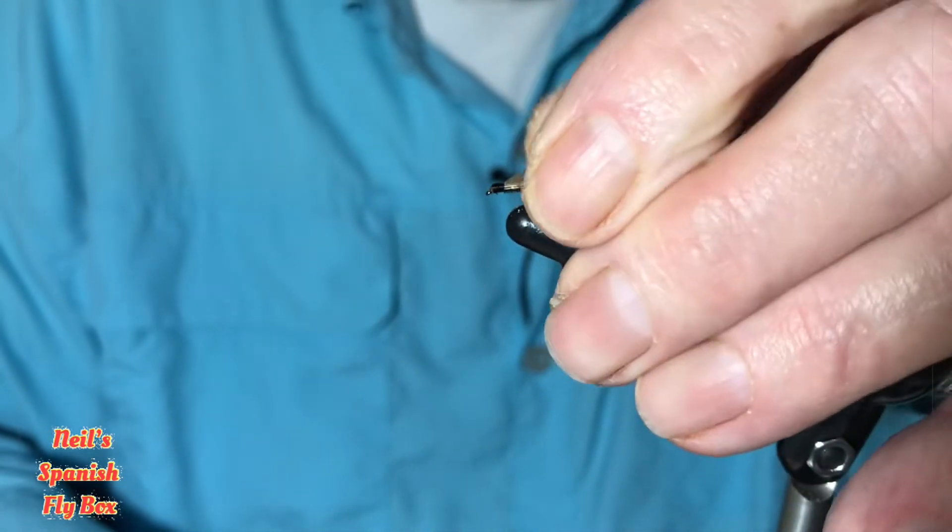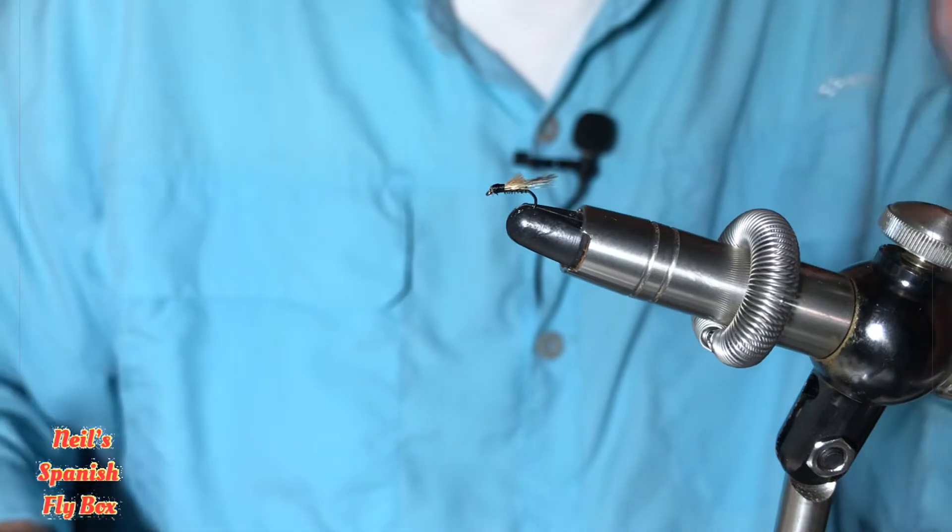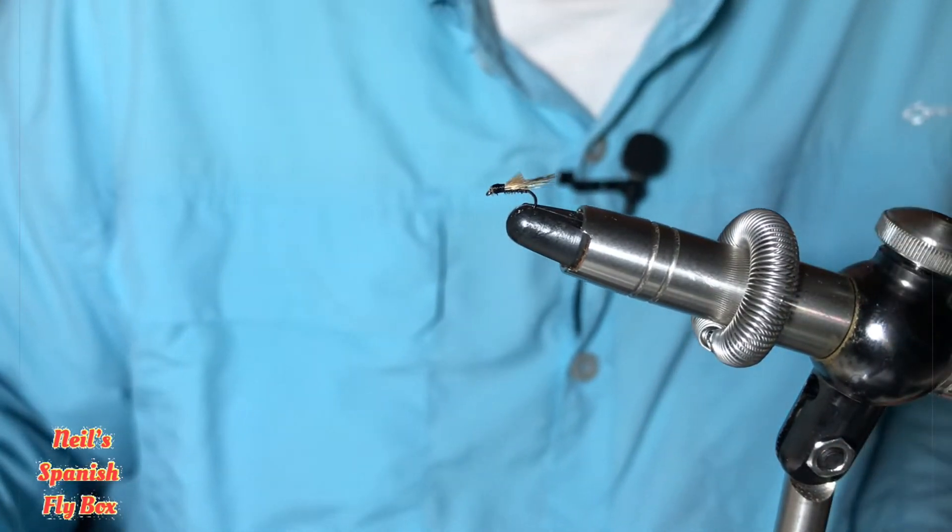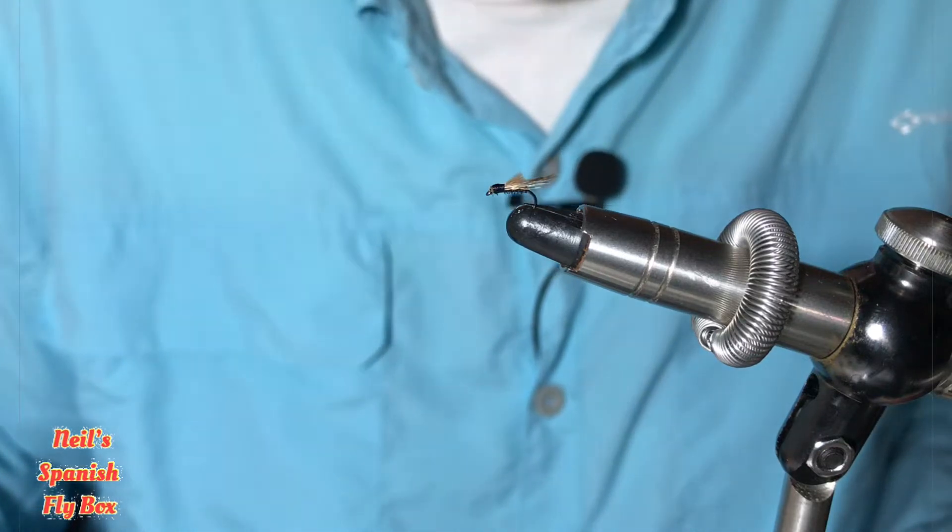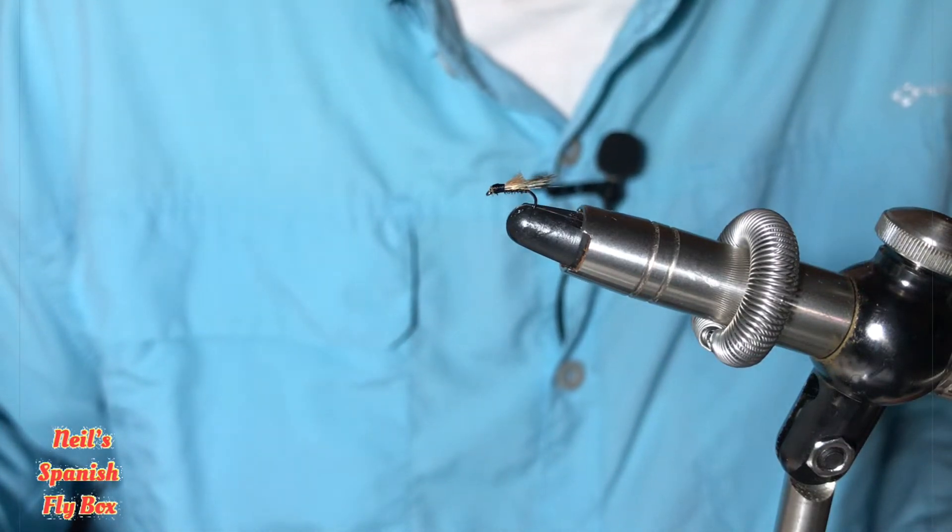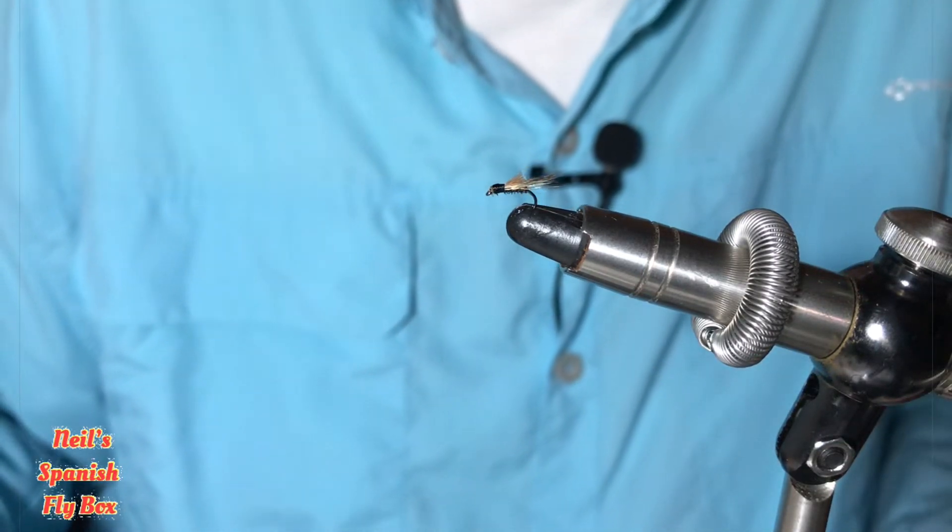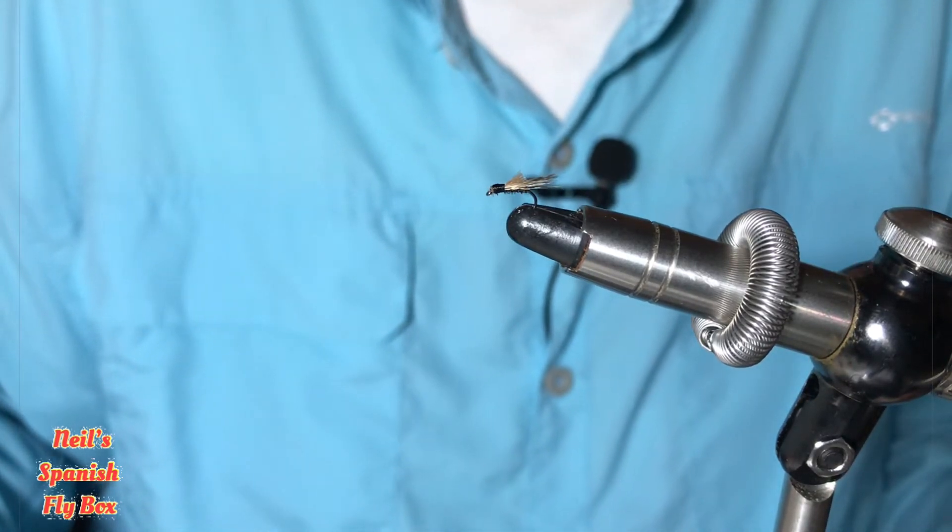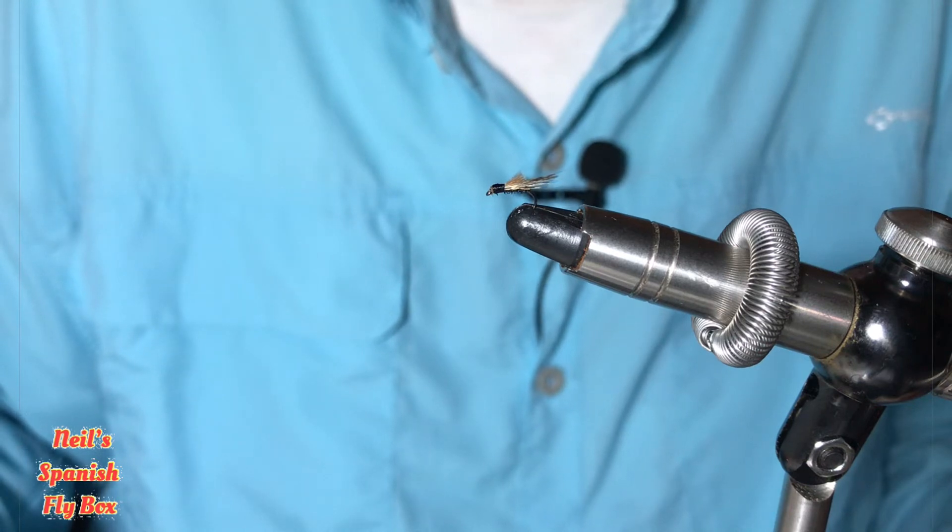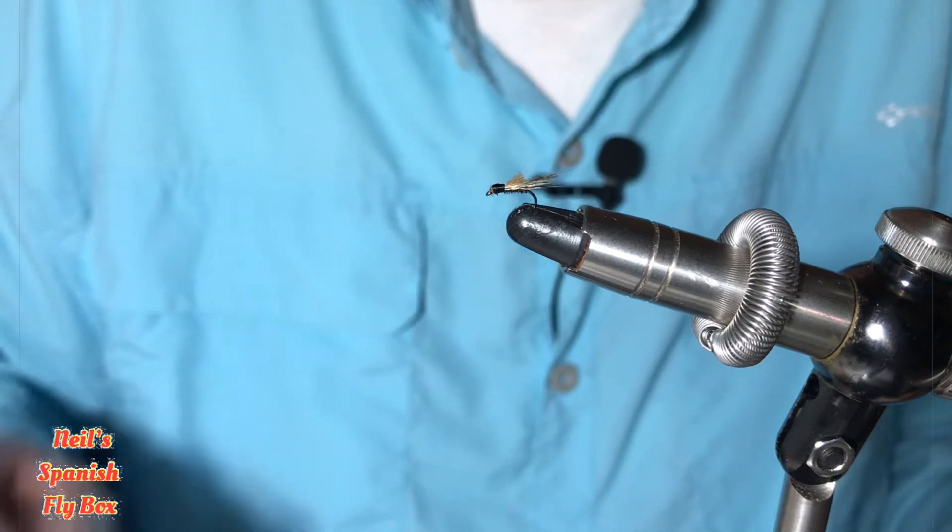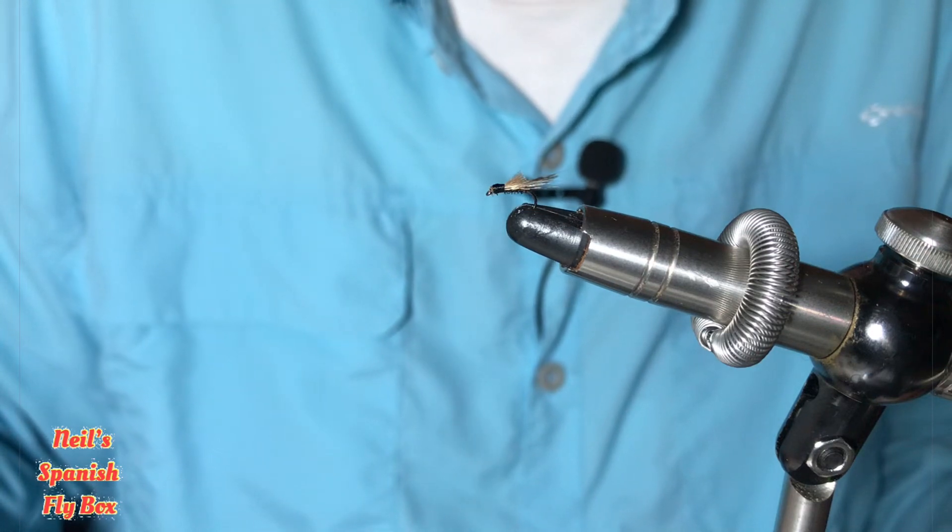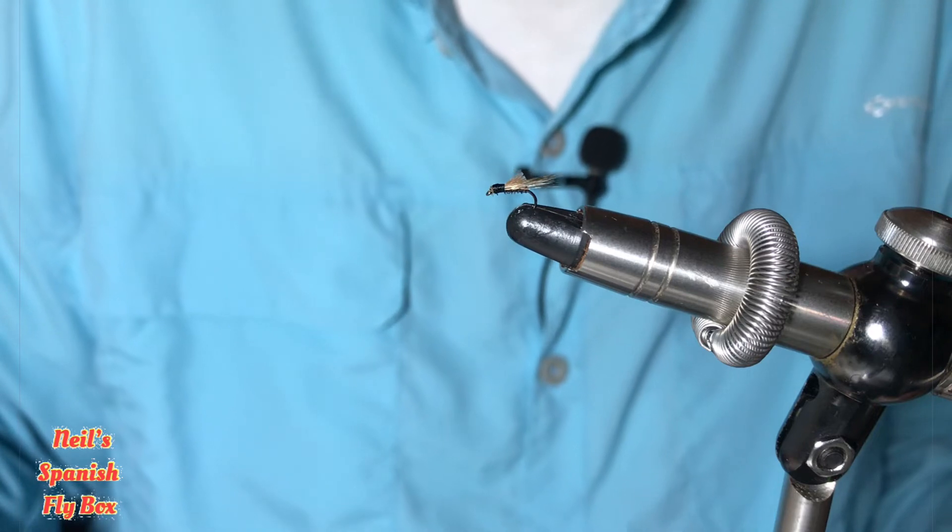And there you have this sedge that is perfect for slow moving water and the flats. Those areas where the water seems flat and very slow current. And if you're standing at the runoff and you see the rises, cast two of them with this. And they'll find it difficult to refuse. A great little sedge. Use it and enjoy it.